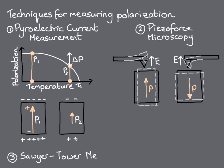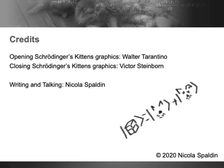A third method, the Sawyer-Tower measurement, will be the topic of the next module, and we will see that it also yields differences in polarization. Now you're ready to move on to Module 5 in the series, where we'll formalize the concept of the surface charge associated with the polarization, as well as the correspondence between the results of polarization measurements and the differences in polarization that we obtained theoretically. Thanks for listening.